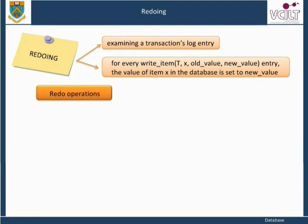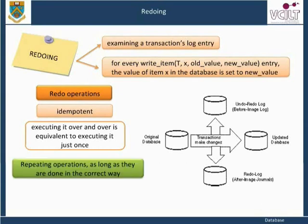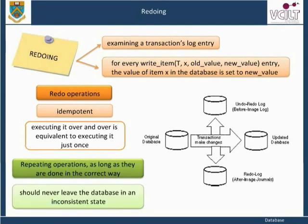The redo operation is required to be idempotent — that is, executing it over and over is equivalent to executing it just once. In fact, the whole recovery process should be idempotent. This is so because if the system were to fail during the recovery process, the next recovery attempt might redo certain write item operations that had already been redone during the previous recovery process. The result of recovery from a crash during recovery should be the same as recovery when there is no crash. Repeating operations, as long as they are done in the correct way, should never leave the database in an inconsistent state.